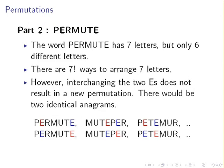So, moving on, what we're going to look at now is the word PERMUTE. There are seven letters, but only six distinct letters. We have two E's there. Now, there are seven factorial ways to rearrange the seven letters, but interchanging the two E's does not result in a new permutation. It does not result in a new word, essentially.